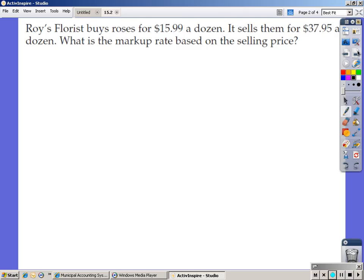First thing we've got to do is find the markup. And if you recall from yesterday, the way you find the markup is the selling price minus the purchase price. So $37.95 minus $15.99. Plug that in your calculator. $37.95 minus $15.99. You get $21.96 for your markup.